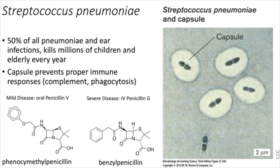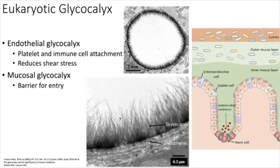Gram-negative bacteria have a very thin layer of peptidoglycan — only about two to three nanometers compared to 20-80 nm in gram-positives. This thin layer is sandwiched between two lipid bilayers: the inner cell membrane and an outer membrane. The outer membrane can carry lipopolysaccharide, or LPS, which has lipids with long polysaccharide chains extending outward. The space between the two phospholipid bilayers is called the periplasmic space.